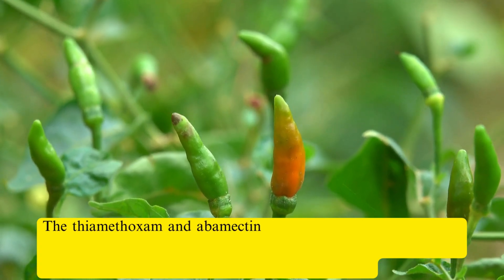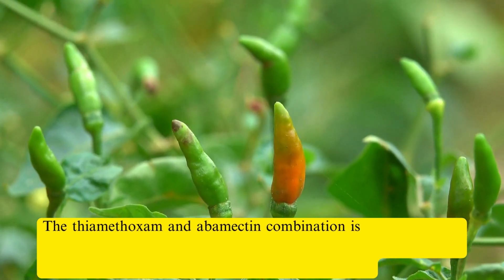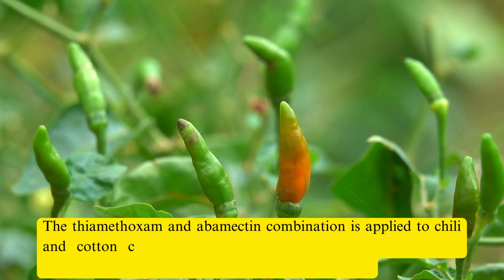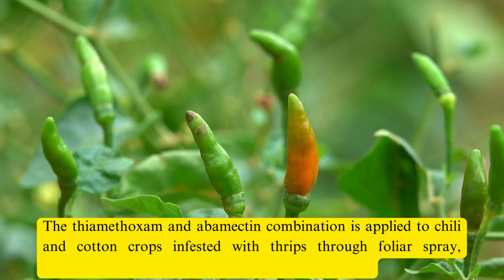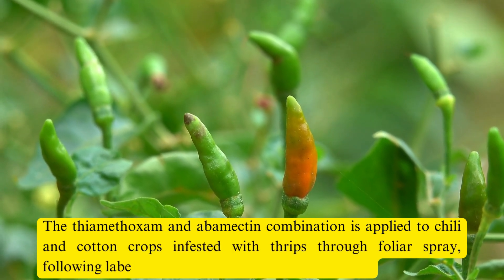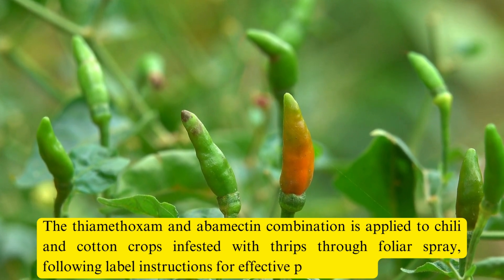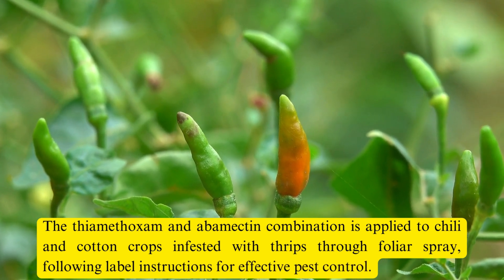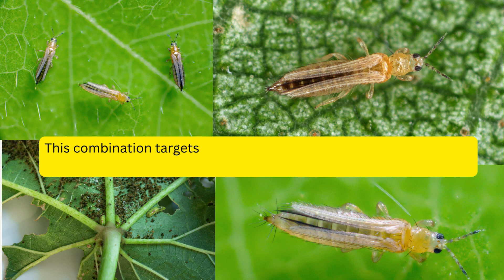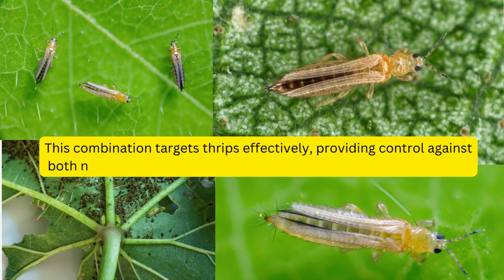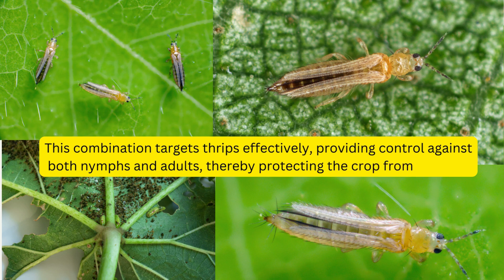Application. The thiamethoxam and abamectin combination is applied to chili and cotton crops infested with thrips through foliar spray, following label instructions for effective pest control. This combination targets thrips effectively, providing control against both nymphs and adults, thereby protecting the crop from damage.